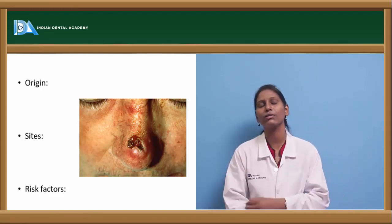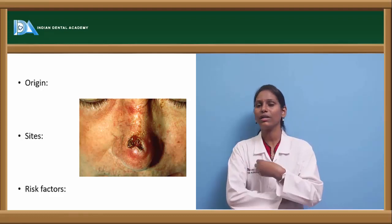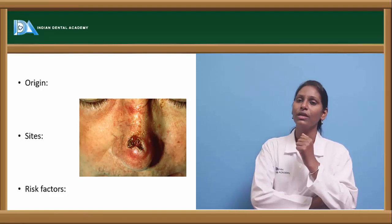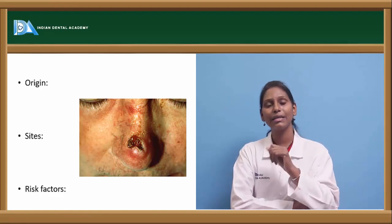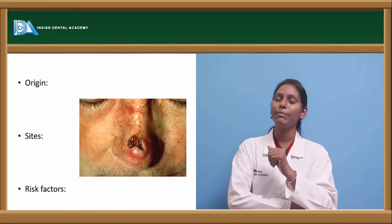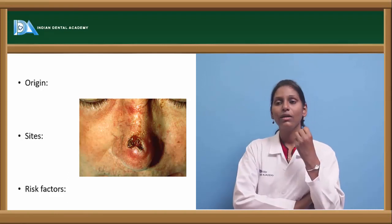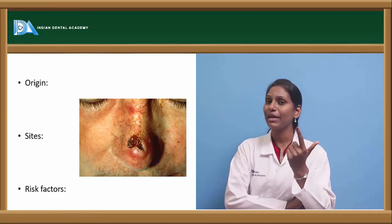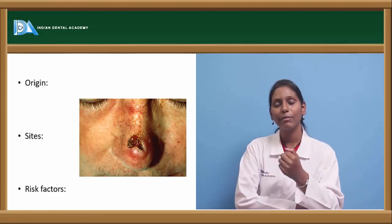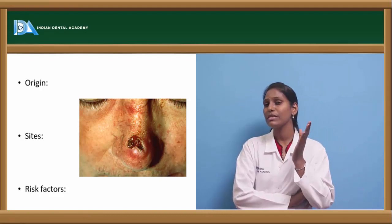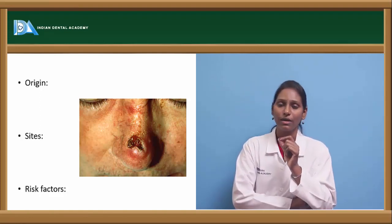Most squamous cell carcinomas sometimes occur de novo — as a fresh lesion. Sometimes they develop from pre-existing lesions called pre-malignant conditions, now termed potentially malignant disorders. These include oral submucous fibrosis, leukoplakia, Marjolin's ulcer (a long-standing scar ulcer), and venous ulcers. We can also see squamous cell carcinoma developing from basal cell carcinoma — these are specifically called basosquamous carcinomas.